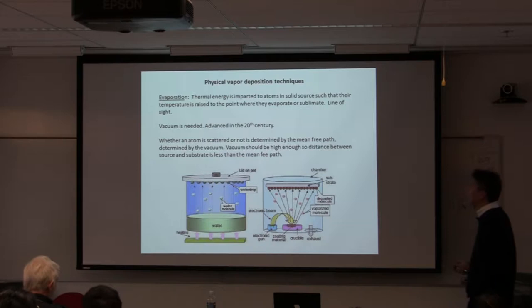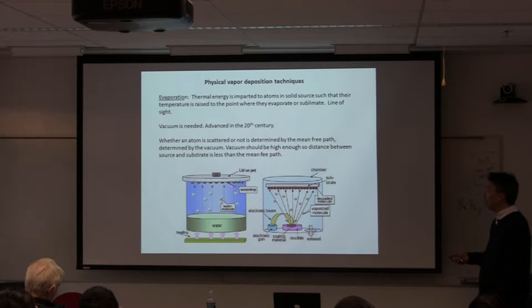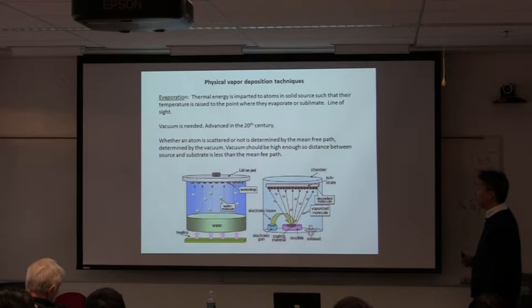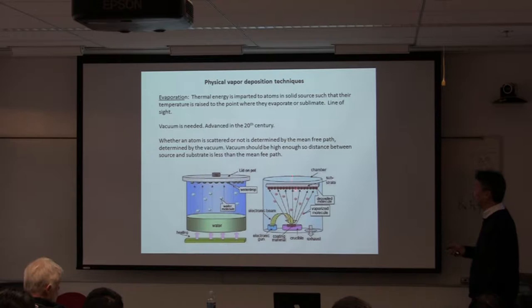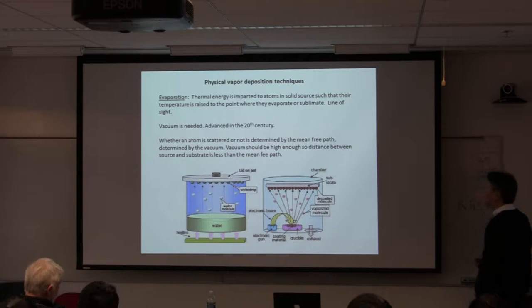PVD, as the name suggests, is about making vapor. Evaporation involves creating vapor, similar to boiling water in a pot — you get vapor at some point, there's a vapor pressure associated with it, and vapor condenses on the other side. You need high vacuum so that the distance between the substrate and the target is shorter than the mean free path, otherwise atoms get blocked. The key characteristic of vapor deposition is that it's a line-of-sight technique — if you can see the source from a position on the target, you get deposition.